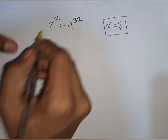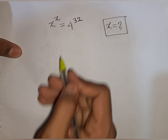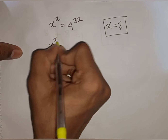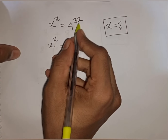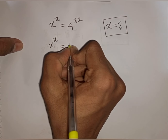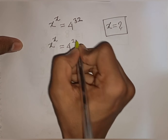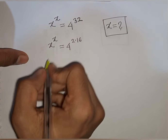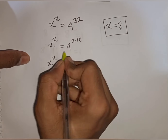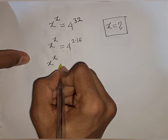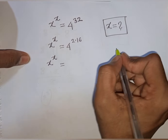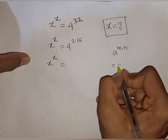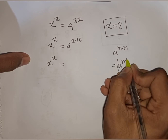Now, how to solve x power x is equal to 4 power 32 — find the value of x. We have x^x equal to 4^32, which can be rewritten as 4 power of 2 times 16. We apply the rule that a power m times n is equal to a power m, bracket power n.